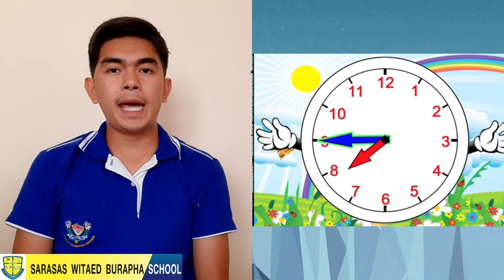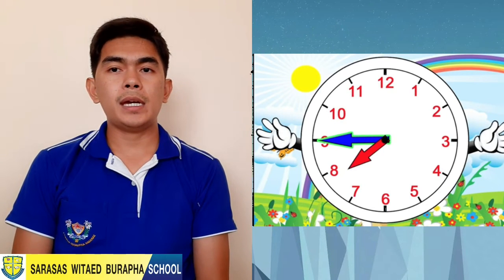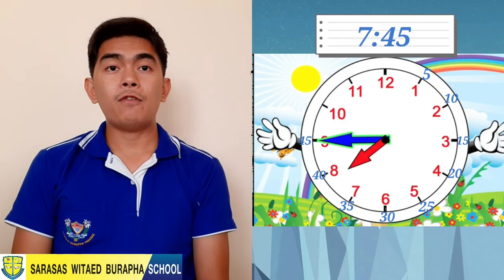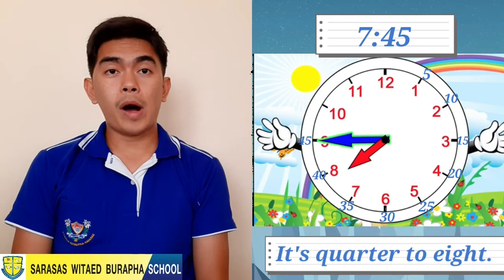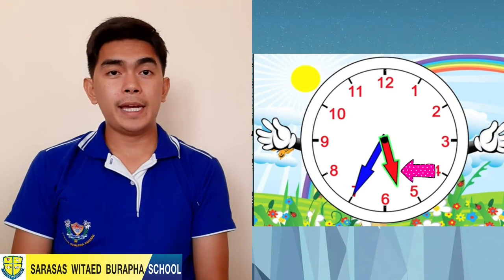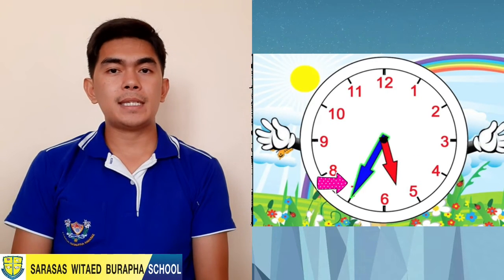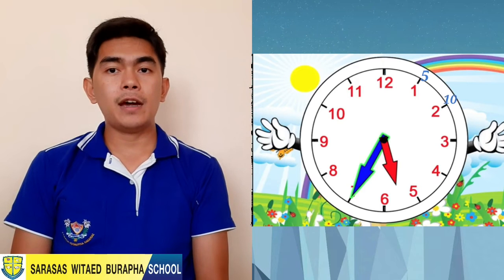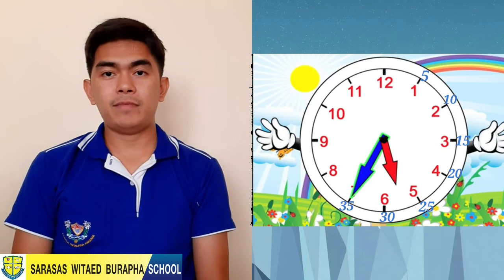Now the hour is seven, and the minute hand is pointing to: 5, 10, 15, 20, 25, 30, 35, 40, 45. It's 7:45, or quarter to eight. One more — the hour is five. Counting the minutes: 5, 10, 15, 20, 25, 30, 35. It's 5:35, or 25 minutes to six.